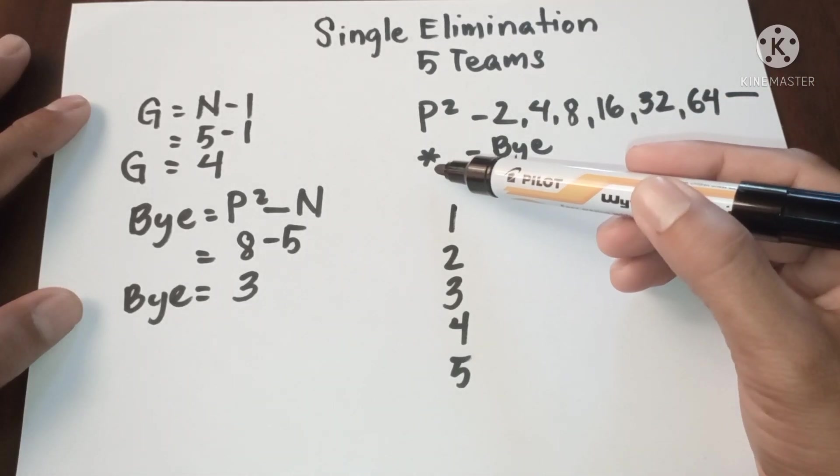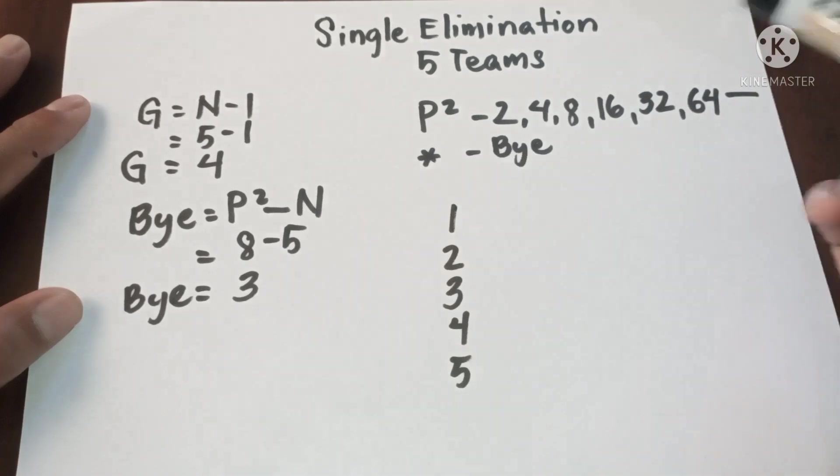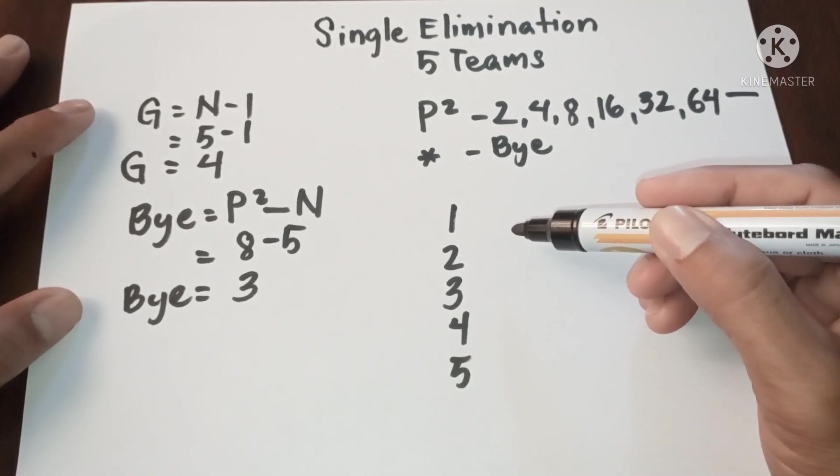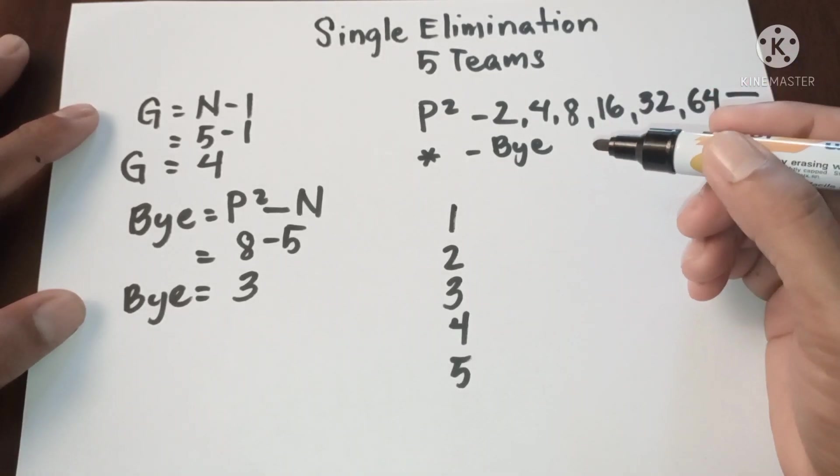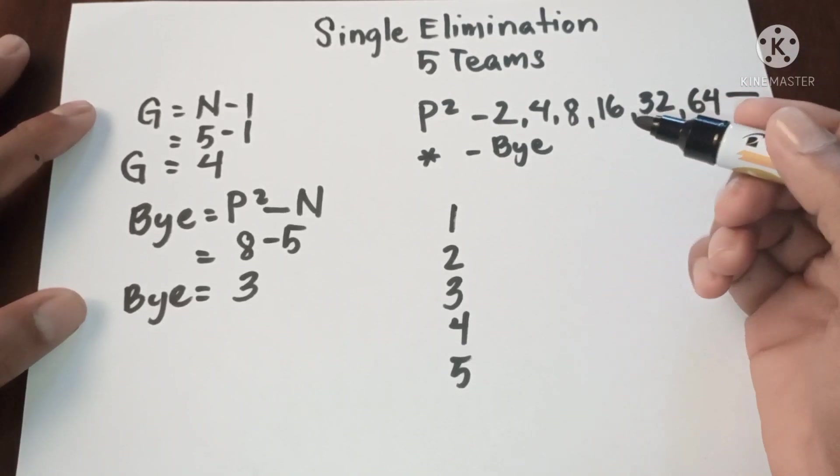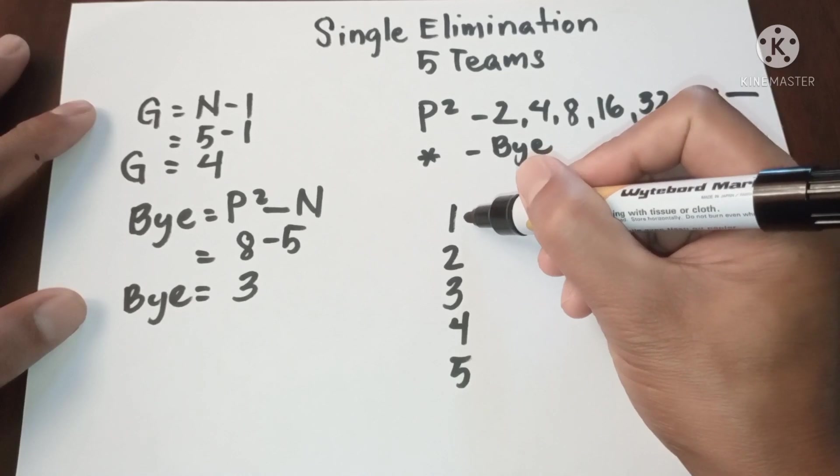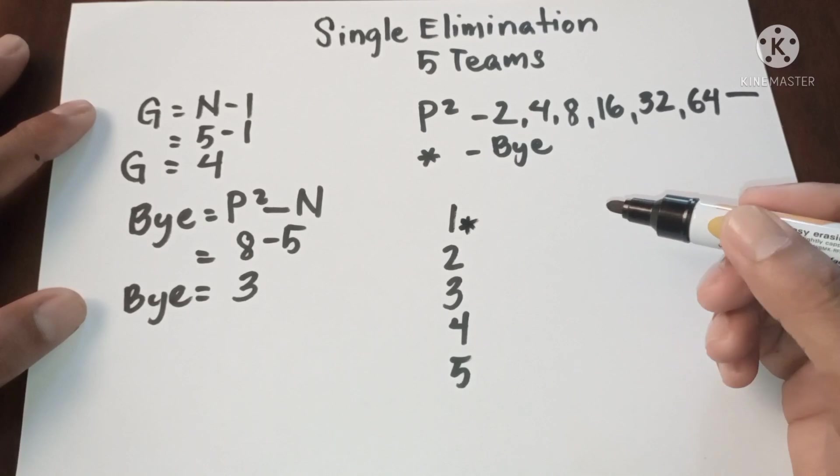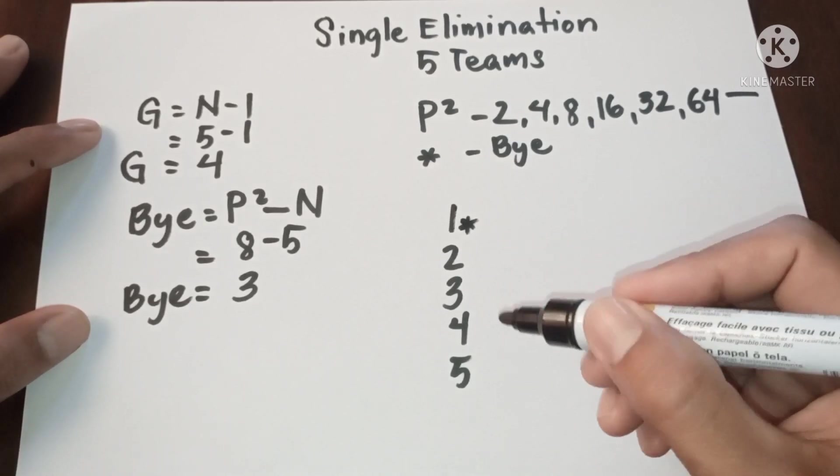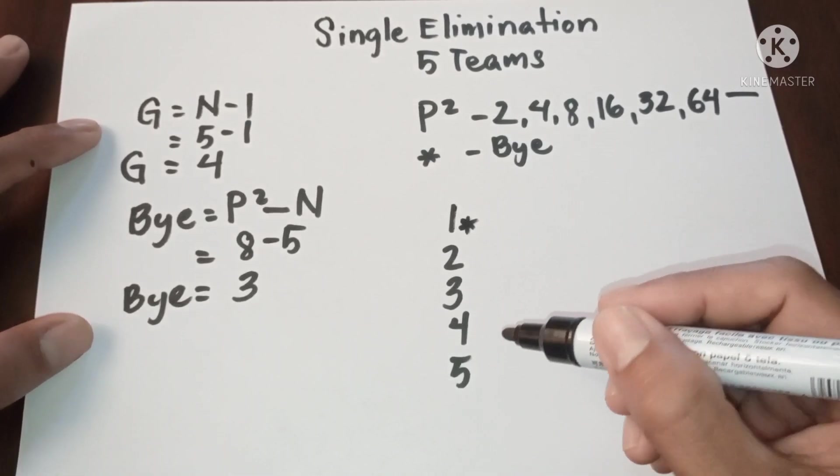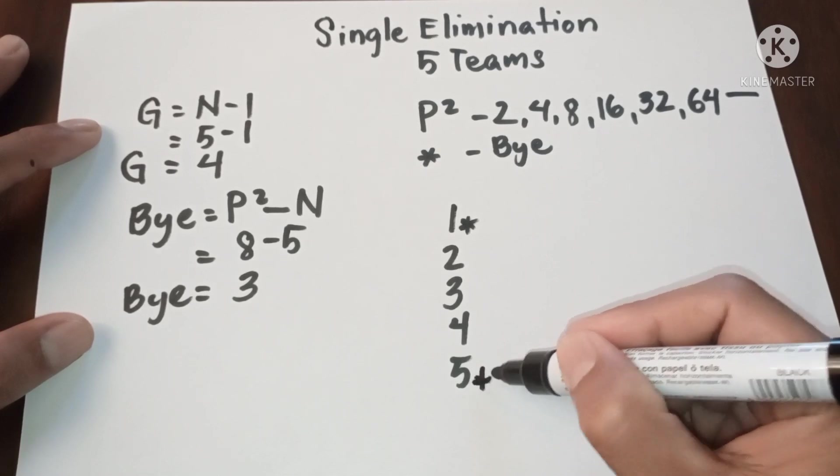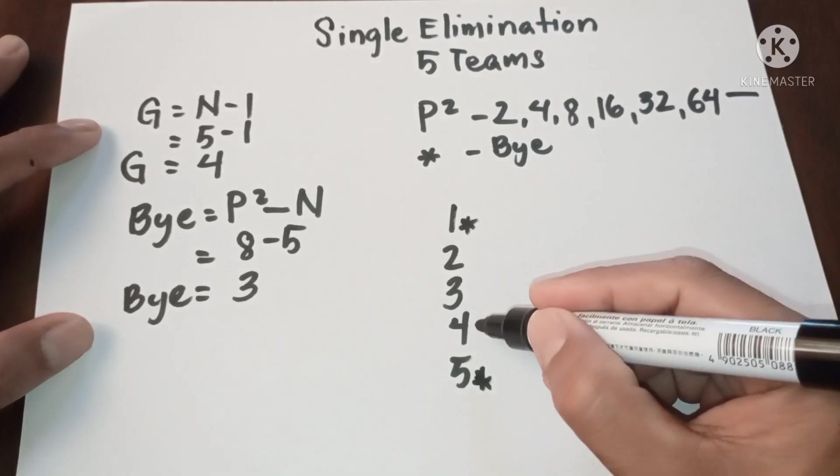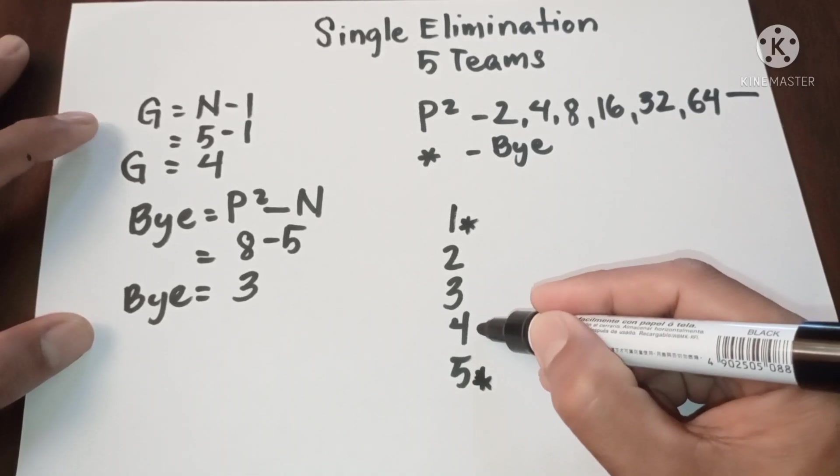Now please take note that we use the asterisk to determine the bye. Now let us distribute the bye properly. So if we have only one bye, it must be on the top of the upper bracket. Then if we have two byes, it must be on the bottom of the lower bracket. Since we have three byes, we have no choice but to make a third bye.